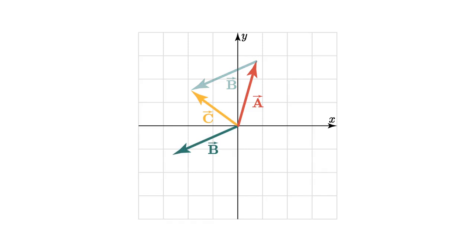I could have also added a to b by sliding the tail of a to the head of b. You can see that this makes a parallelogram, and the sum, vector c, is just the diagonal of this parallelogram.